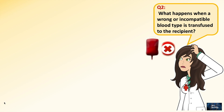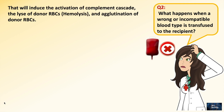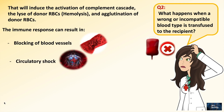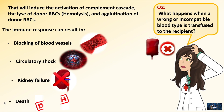The second question: what happens when a wrong or incompatible blood type is transfused to the recipient? That will induce the activation of complement cascade, lysis of donor RBCs — meaning hemolysis — and agglutination of donor RBCs. Not only that, the immune response can result in blocking your blood vessels, circulatory shock, kidney failure, and maybe death.